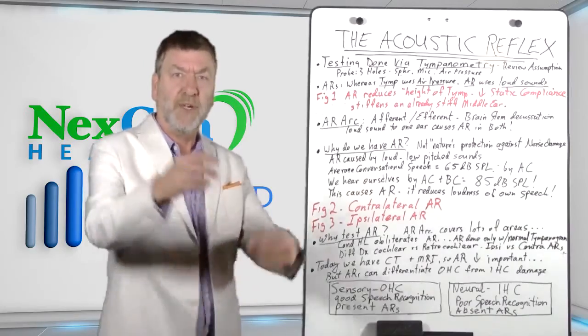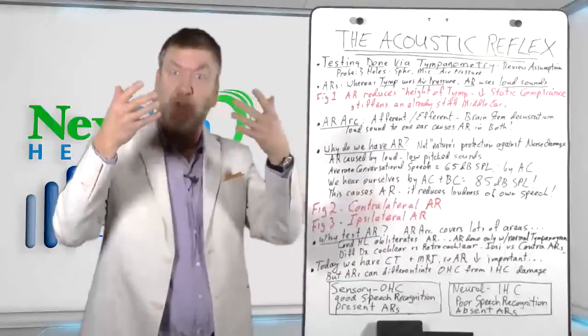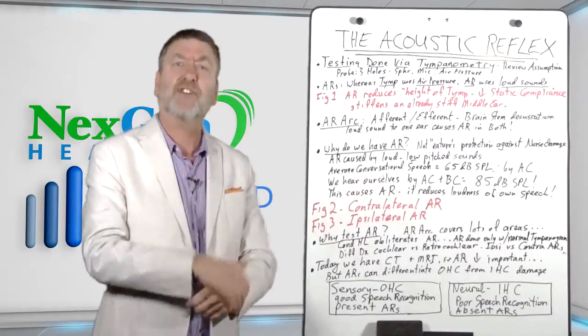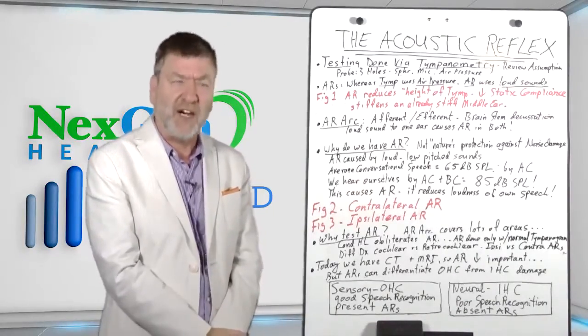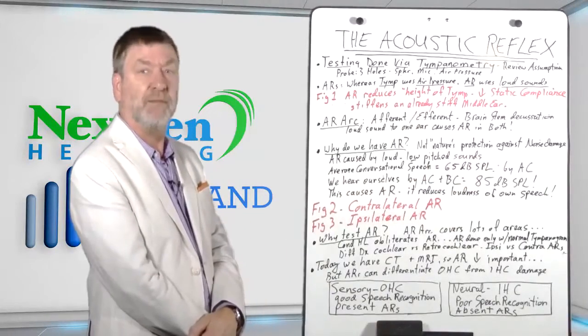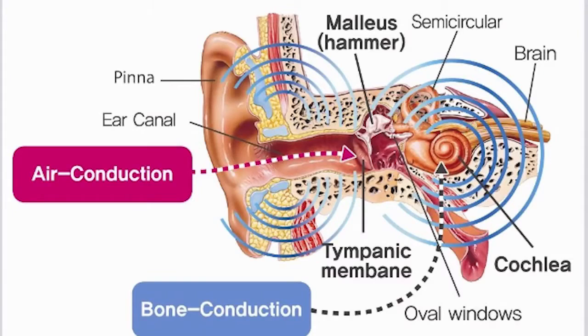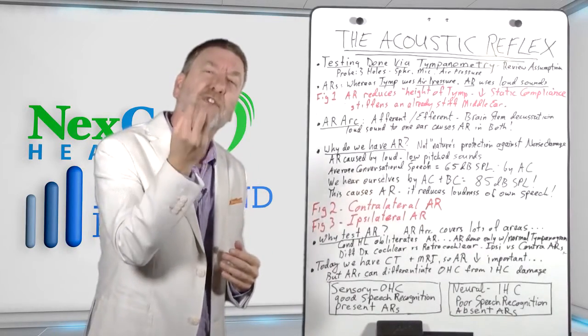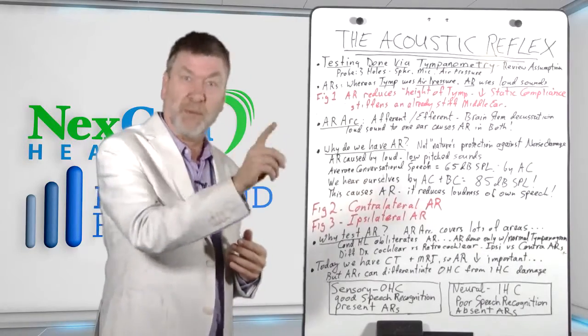What's the average intensity of average conversational speech? We hear other people through air conduction, through sound waves going through the air. And average conversational speech, well, that's about 65 decibels sound pressure level by air conduction. We hear ourselves, however, by a combination of air conduction, sound waves, and bone conduction, through the vibration of our own skulls.